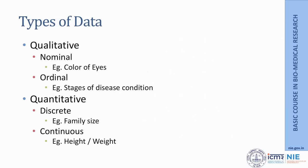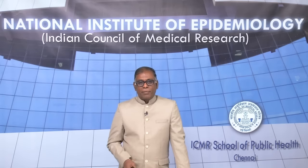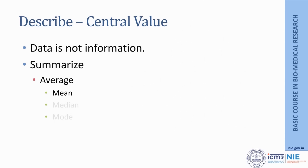Quantitative data are of two categories. One is discrete data, which is essentially a whole number — for example, number of siblings or family size. The other is continuous data, where there is a continuous measurement, like height and weight. These are all different types of data which require different types of analytical skill.